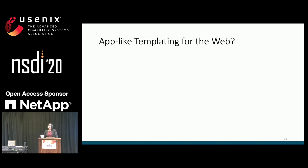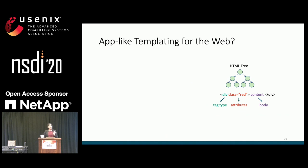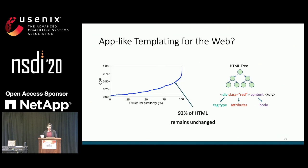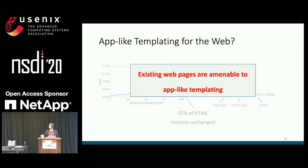We asked whether existing web pages are amenable to app-like templating. To answer this, we analyzed HTML files for 500 pages over the course of a day, representing HTML as trees where each node is labeled with a tag type, a set of attributes, and a body. We found that despite being uncacheable, HTML content remains largely unchanged over time, and concluded that existing web pages are already amenable to this kind of templating.